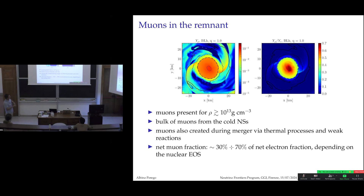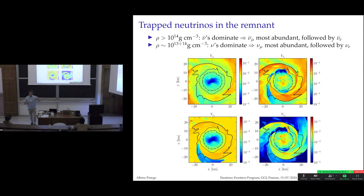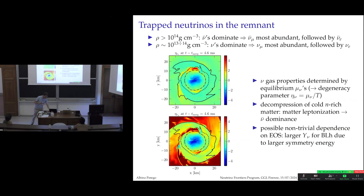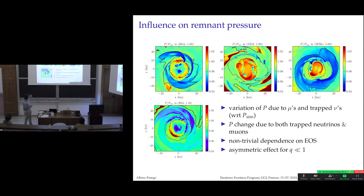Muons are important not only because they are present, but because they open new reaction channels. Without muons, only electron neutrinos and antineutrinos can undergo charge-current reactions. Including muons breaks the symmetry between mu and tau neutrinos: mu neutrinos and antineutrinos become more similar to electron neutrinos and antineutrinos, leaving tau neutrinos distinct. The error in pressure from neglecting muons is of the order of a few percent.